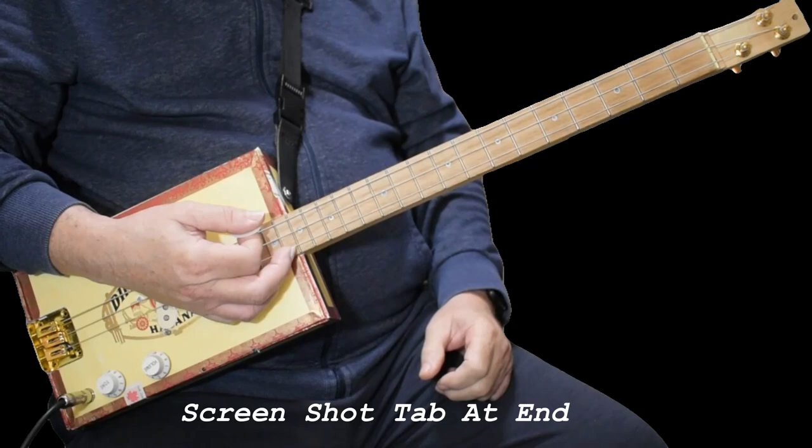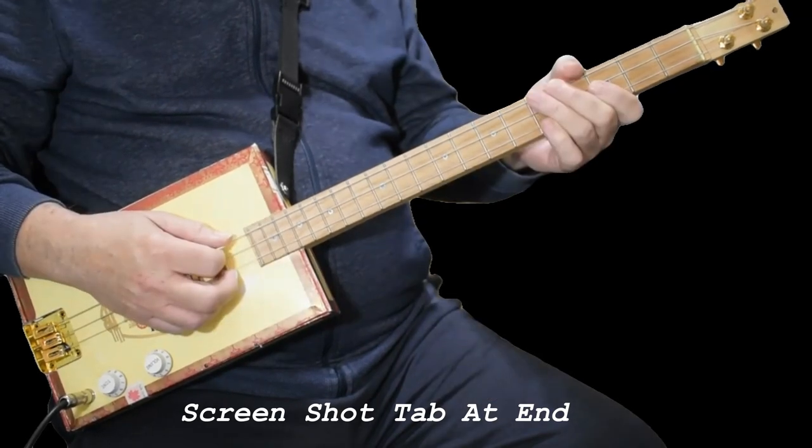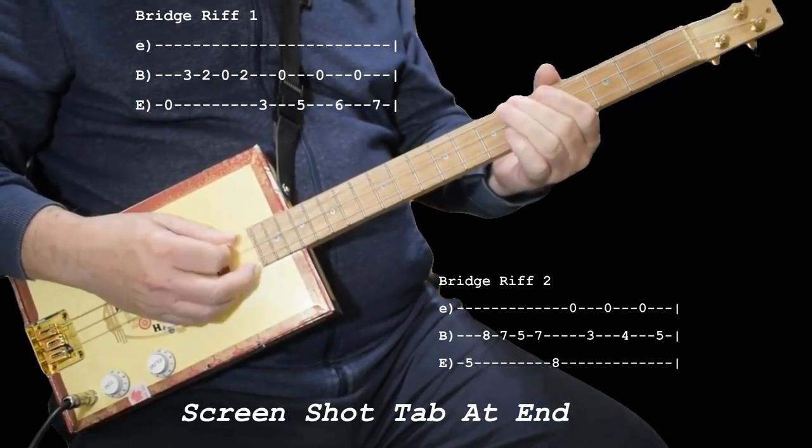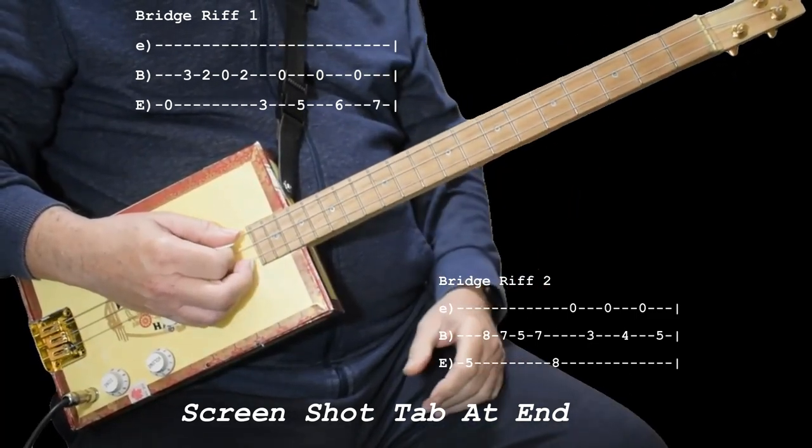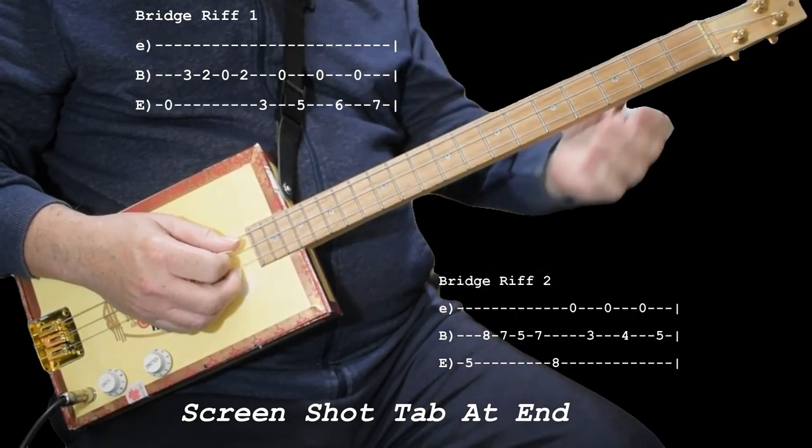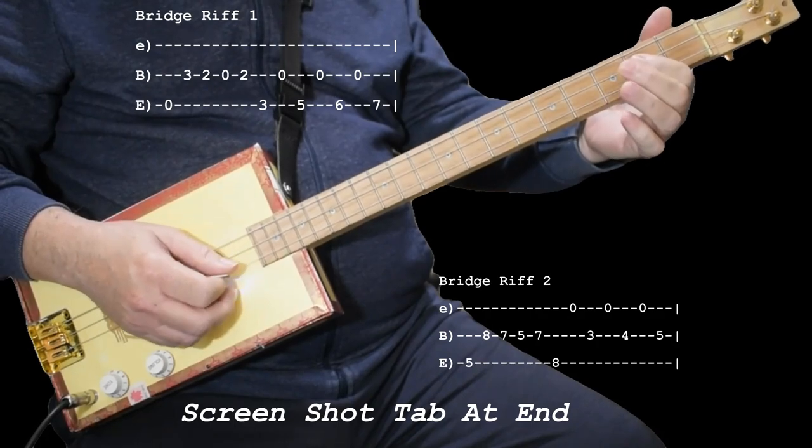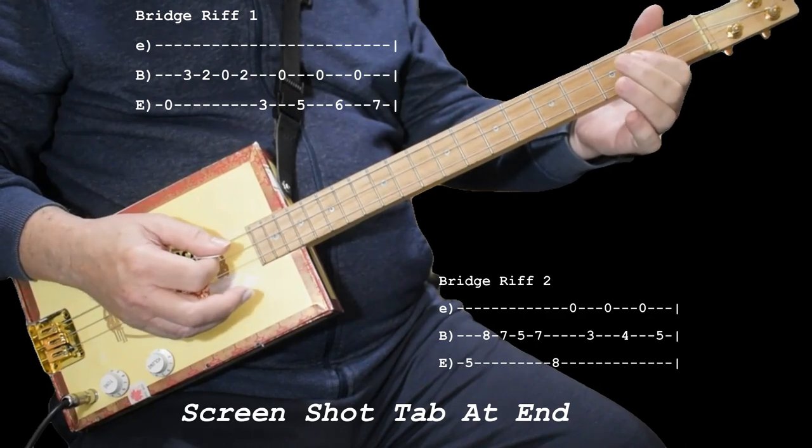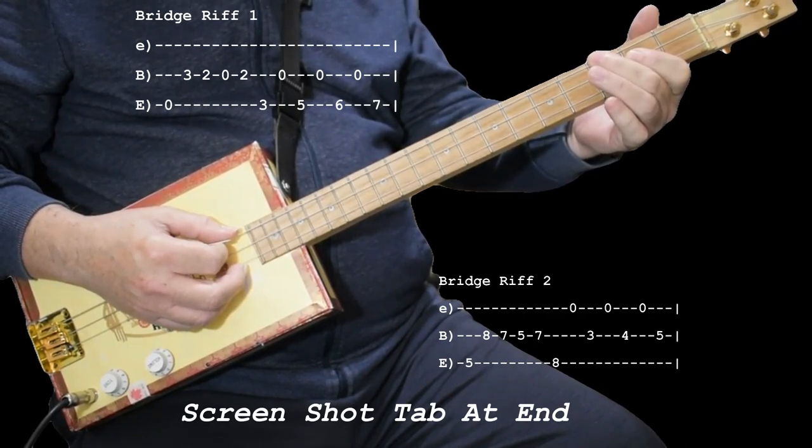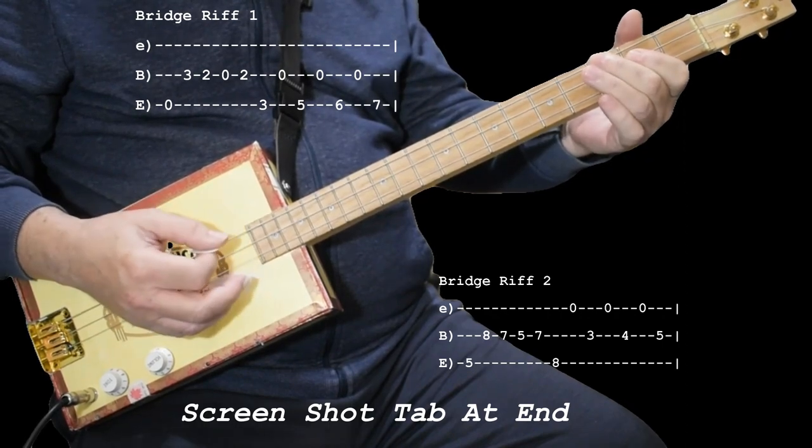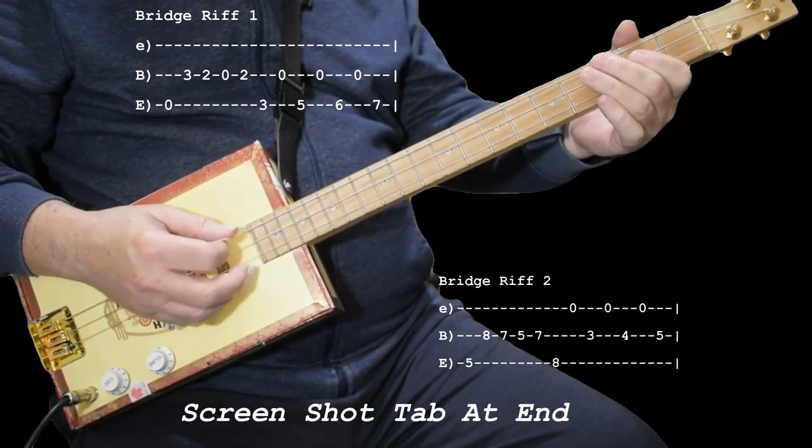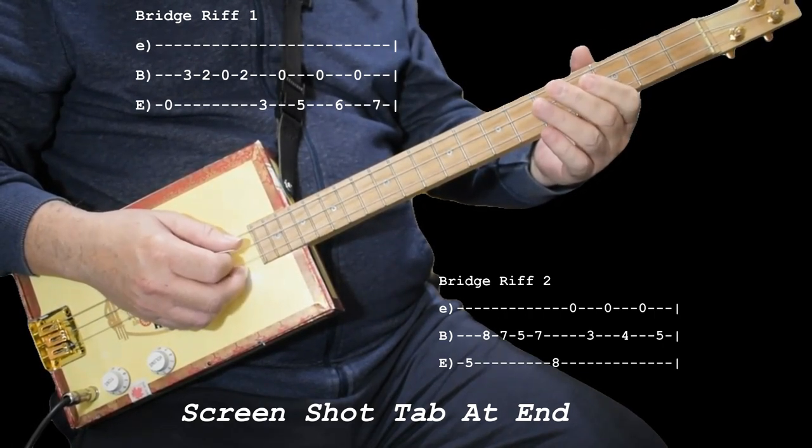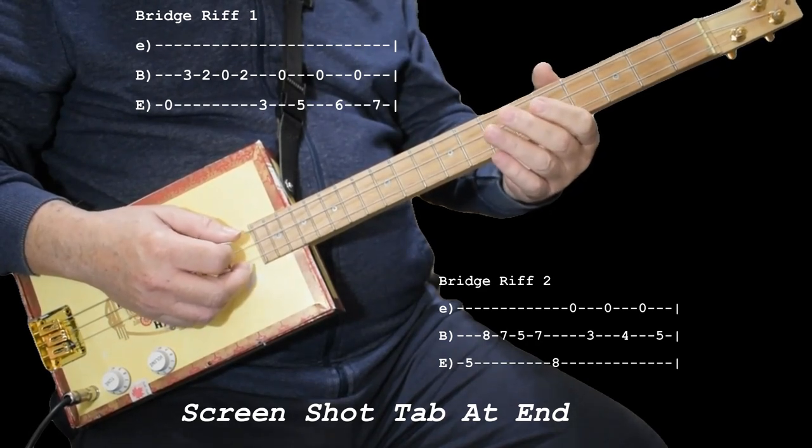Now we're into the next tricky part of the song. The bridge, basically. So I'll show you what that is. Open, three on the middle, two, open, two, that's all on the middle. And then you sort of bend the three to that kind of in-between note. And then it's kind of like it was at the beginning. Zero in the middle, five, zero, six, zero, seven.